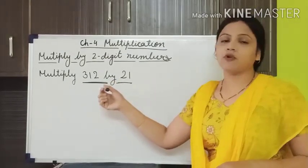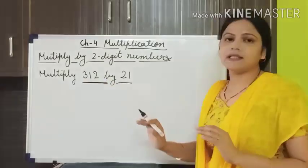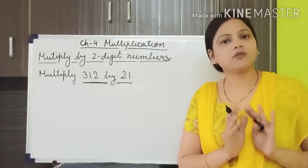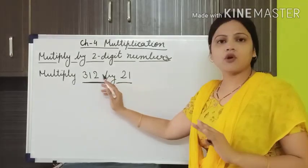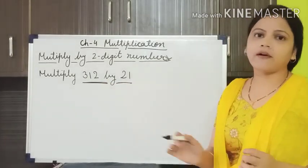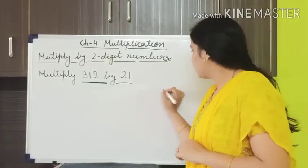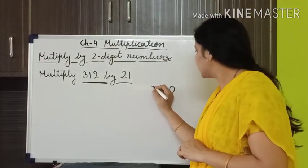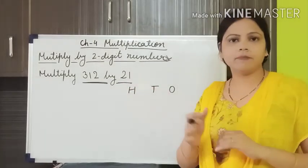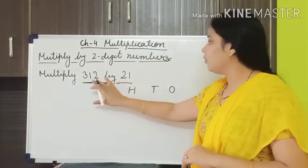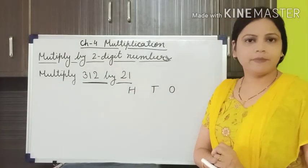First, what I have to do? First I have to arrange these numbers according to their places. As this number is of 3 digits, we have to write 3 different places: 1s, 10s, 100s. I have written 3 different places. Now we have to arrange these numbers according to their places.